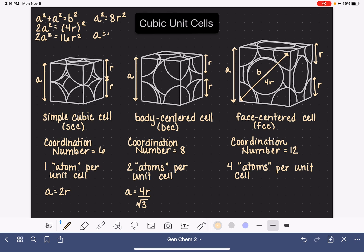And then let's just take the square root of both sides. A equals the square root of 8 times R. And that gives us the relationship between the edge length A and the radius R of any one of the atoms or ions in the face-centered cell.